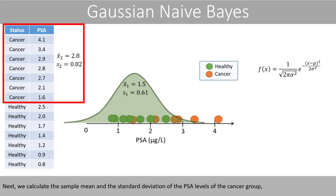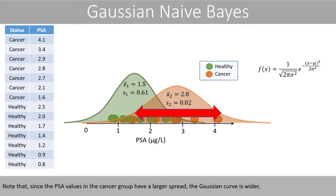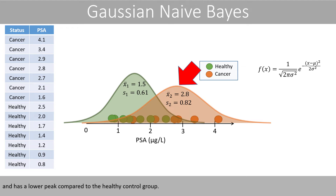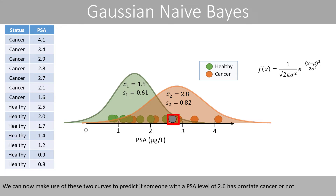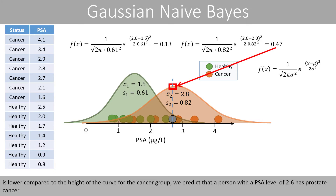Next, we calculate the sample mean and standard deviation of the PSA levels of the cancer group, and place the corresponding Gaussian curve here, which has a mean of 2.8 and a standard deviation of about 0.82. Note that since the PSA values in the cancer group have a larger spread, the Gaussian curve is wider and has a lower peak compared to the healthy control group. We can now make use of these two curves to predict if someone with a PSA level of 2.6 has prostate cancer or not, since the height of the curve for the healthy individuals at 2.6 is lower compared to the height of the curve for the cancer group. We predict that the person with a PSA level of 2.6 has prostate cancer.